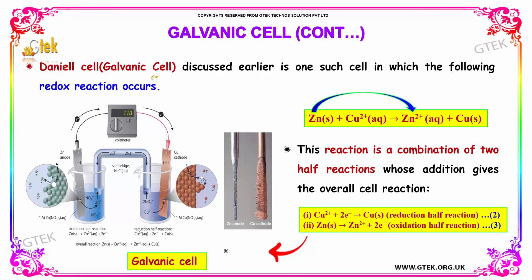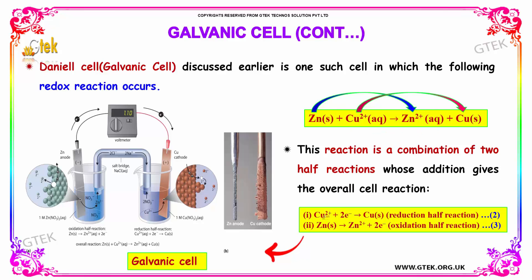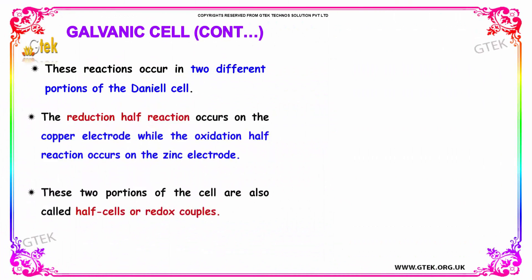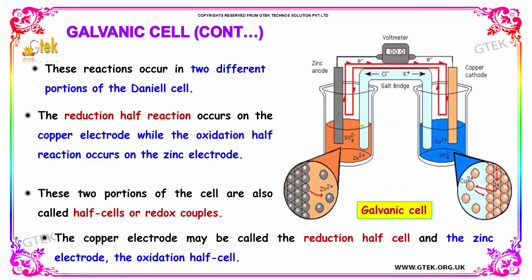The Daniel cell, also called a galvanic cell, involves the redox reaction: Zn + Cu²⁺ → Zn²⁺ + Cu. This overall cell reaction is a combination of two half-reactions: Cu²⁺ + 2e⁻ → Cu (reduction) and Zn → Zn²⁺ + 2e⁻ (oxidation). These reactions occur in two different portions of the Daniel cell.